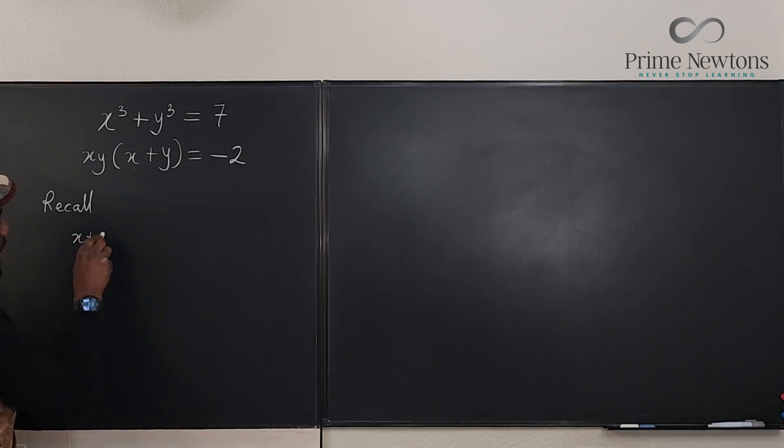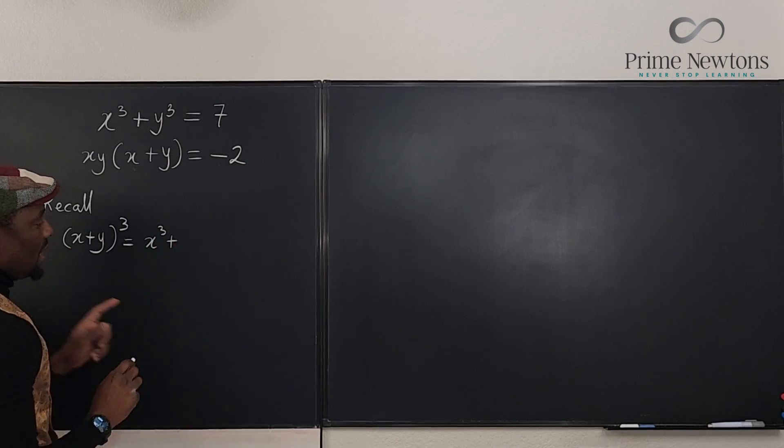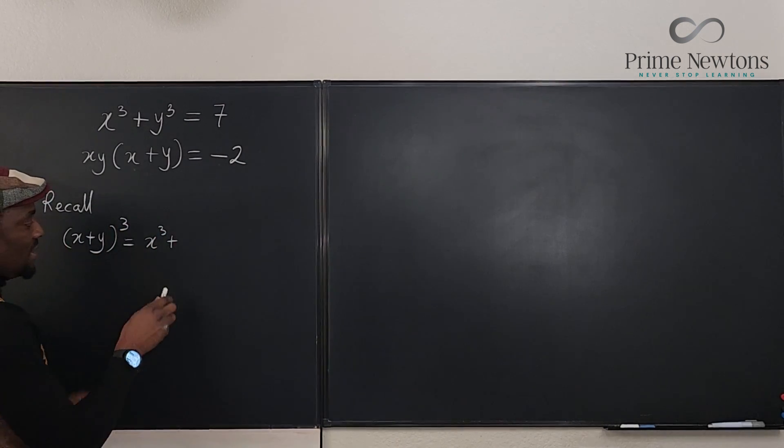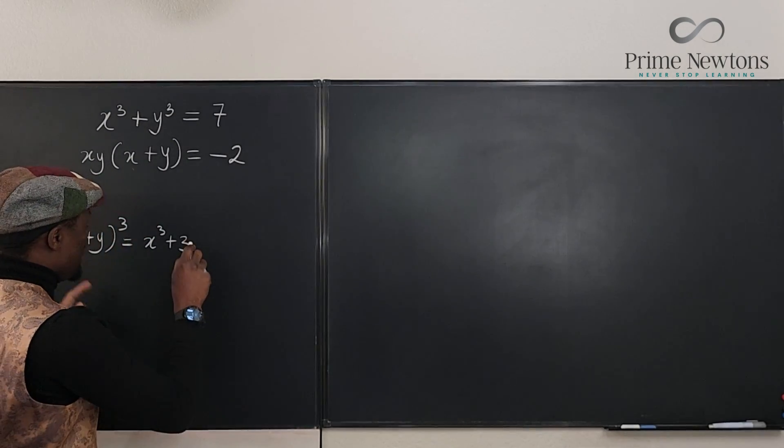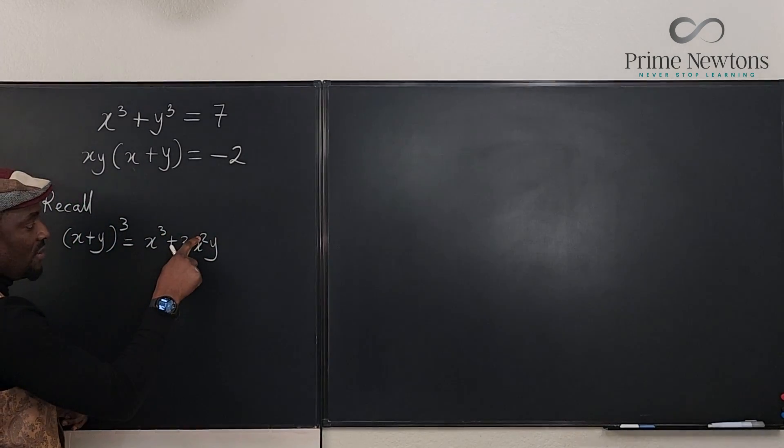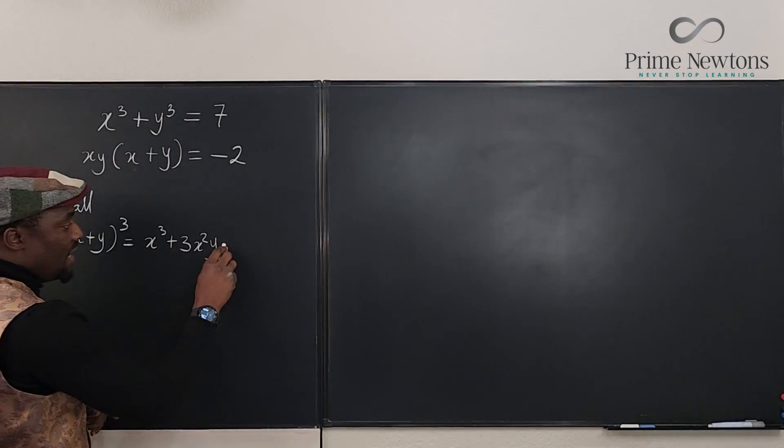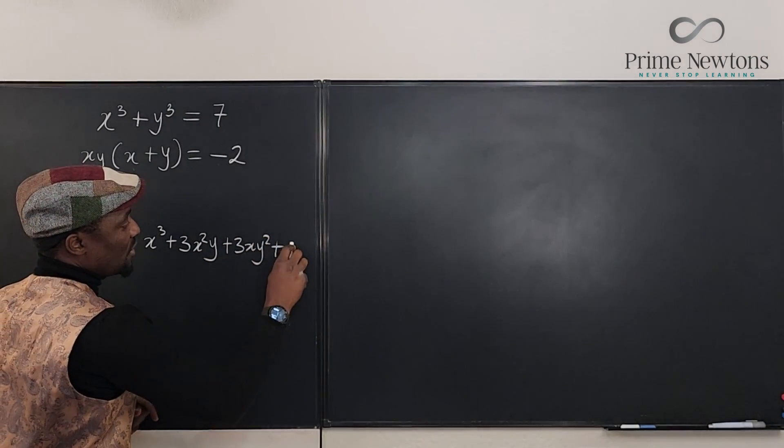Recall that (x + y) cubed is equal to x cubed plus, so if you cube this, the next term is going to be, using Pascal's triangle, it's going to be 3x squared y. You see I've reduced this by one and then I introduced y plus 3xy squared plus y cubed.